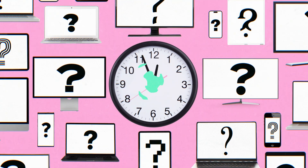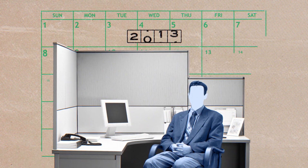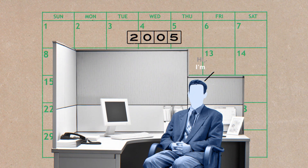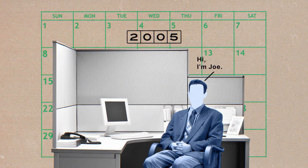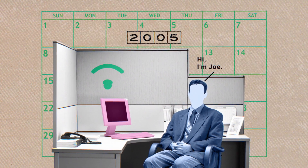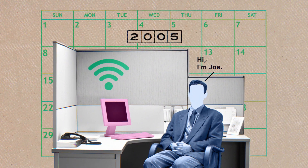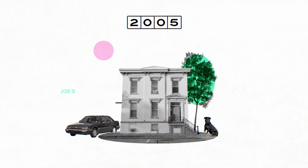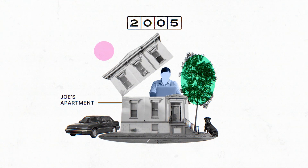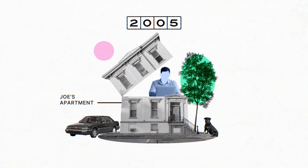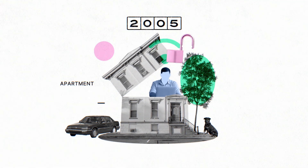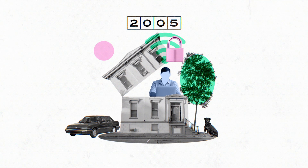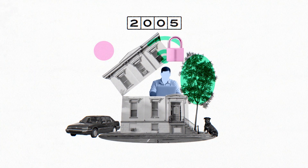Let's go back in time. The year is 2005, and our friend Joe is at work in his company's office. When he logs into his computer, he's connected to his company's network, where he can access the tools he needs. But what if Joe needs to work from home? No problem — he can remotely connect to the network using a VPN, which keeps his traffic secure.